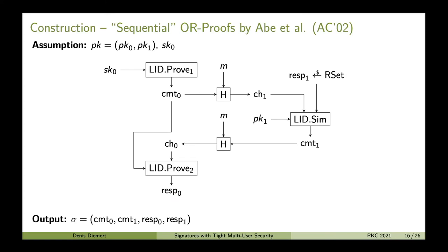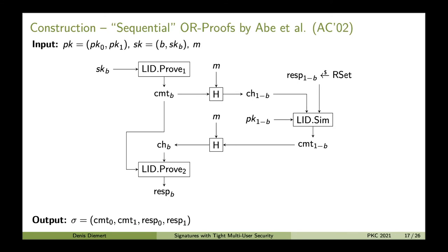There is only one problem left: the adversary always knows which component is real and which is fake. To overcome this, we generate two key pairs pk0, sk0 and pk1, sk1, then choose one secret key uniformly at random and discard the other, keeping only skb. Therefore b determines our real component, and 1-b is always the fake component. This construction is exactly the one considered by Abe et al.